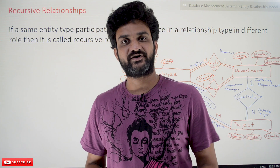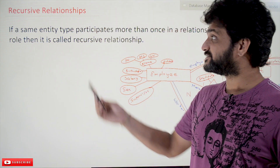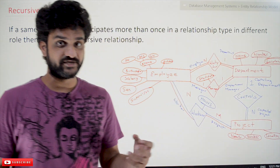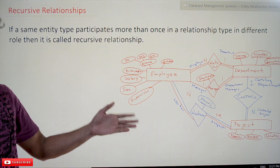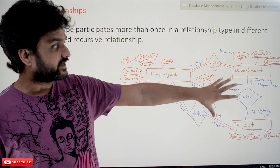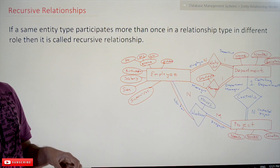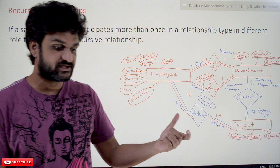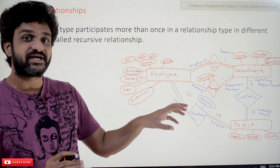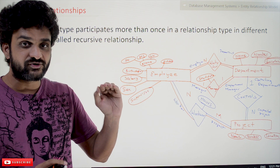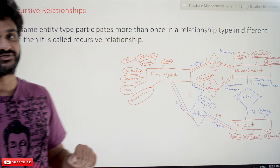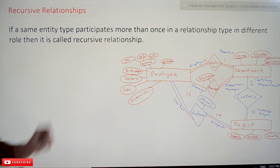Welcome to Learning Monkey. I am Vikram. In this class we'll try to understand recursive relationships. So far we have covered different types of relationship types, and the ER diagram that we have obtained so far is this. Now we will try to understand a new concept which is a bit logical and a bit complex to understand. We suggest you watch this video as many times as possible until you get clarity, and we are going to cover this concept very slowly and step by step.